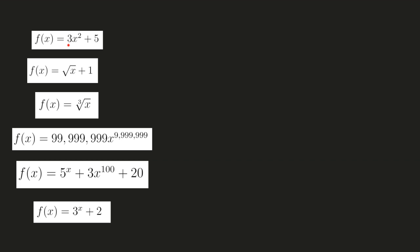Here are the functions we're going to be looking at: f(x) = 3x² + 5, f(x) = √x + 1, f(x) = ∛x, f(x) = 99,999,999 × x^9,999,999, f(x) = 5^x + 3x^100 + 20, and f(x) = 3^x + 2.